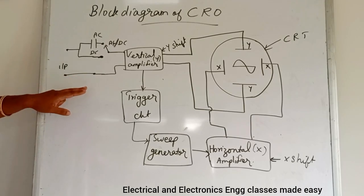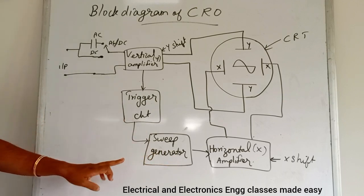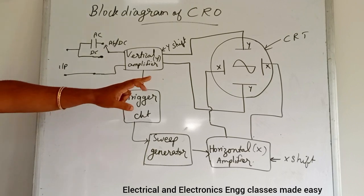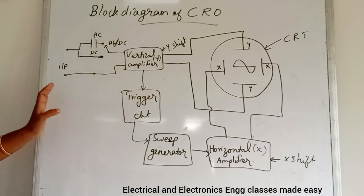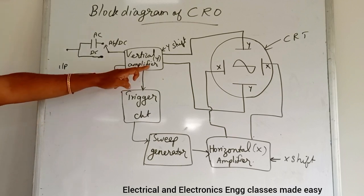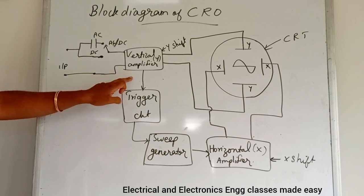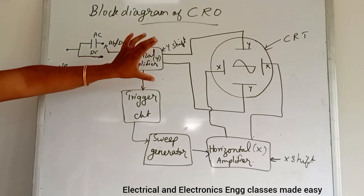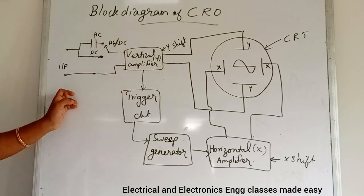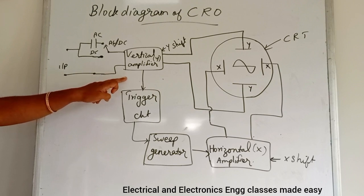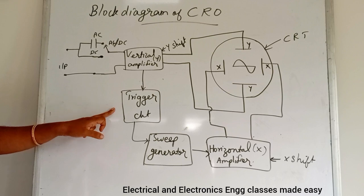Next is the block diagram of the CRO. The CRO consists of: the CRT, vertical amplifier, horizontal amplifier, trigger circuit, sweep generator, and power supplies. The CRT is the main part and displays the quantity being measured. The vertical amplifier, also called the Y amplifier, amplifies the voltage signal to be measured and feeds it to the Y plates of the CRT. The gain of the amplifier can be varied in steps by a control knob on the front panel.